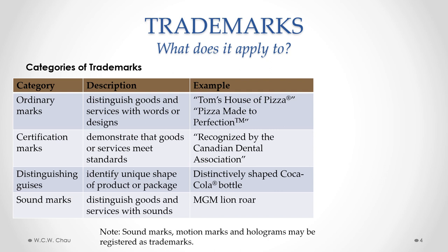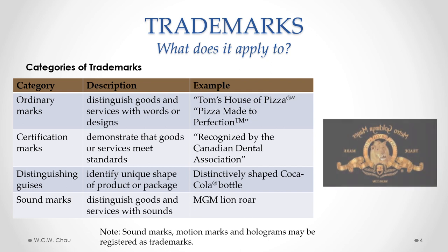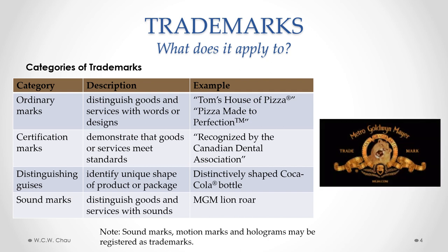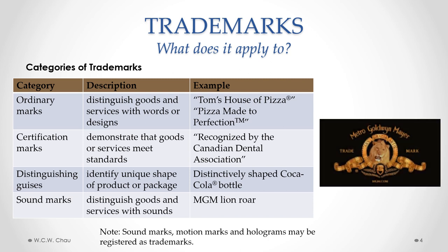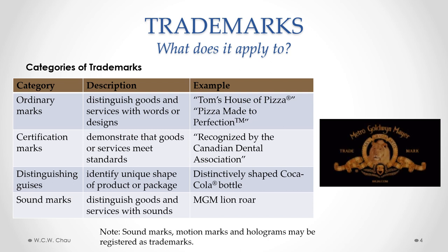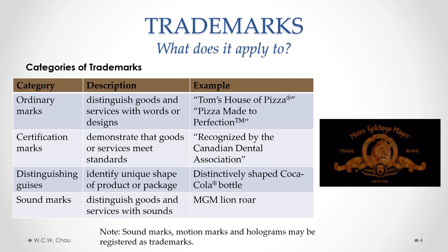The third category is distinguishing guises. So that's where the shape of the product or the package is used to identify the goods. Somehow that shape or package is unique. One very famous package shape is the hourglass shape of a Coca-Cola bottle. Most recently, sound marks is another category of trademark. So this distinguishes goods and services with sounds. The ability to trademark a sound arises from a case involving the movie company MGM. They were successful in being able to trademark the roar of the MGM lion, as you see there.